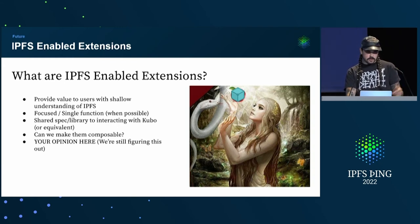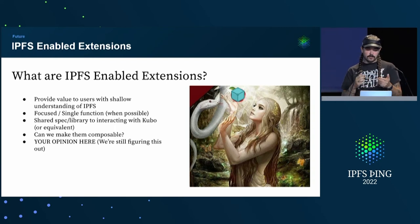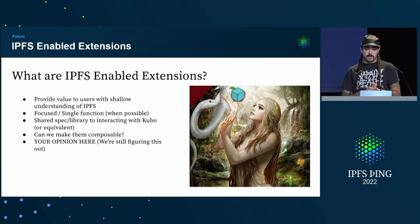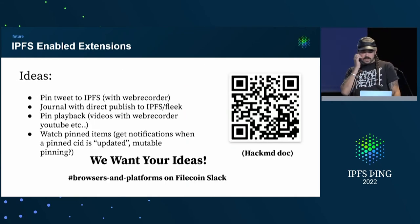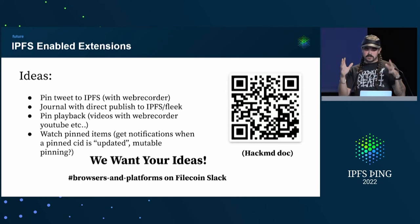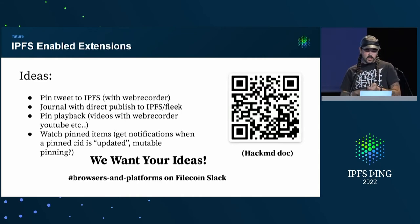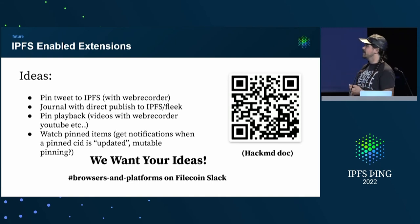Shared single functionality when possible, shared spec — hopefully we can reuse code, just a library you could include in your extension or a template. It will be interacting with Kubo or hopefully some of the new HTTP specs going through, and should be agnostic in that way. Maybe we can make them sort of composable — maybe you can have some of these extensions working together. Some examples: pin tweets to IPFS, a journaling one where you open it, click one click, get a full-page content-editable web page, type it, and boom — publish straight to IPFS or Fleek. Pin playback. And Mo was talking about mutable pinning — I actually had this down, I don't know how I would do it as an extension, but hopefully we can work together on that and eventually get a spec going.